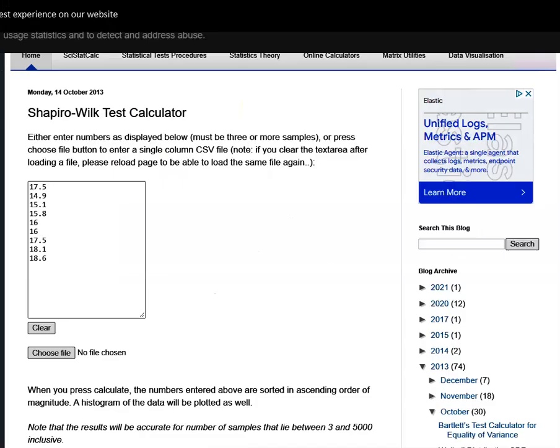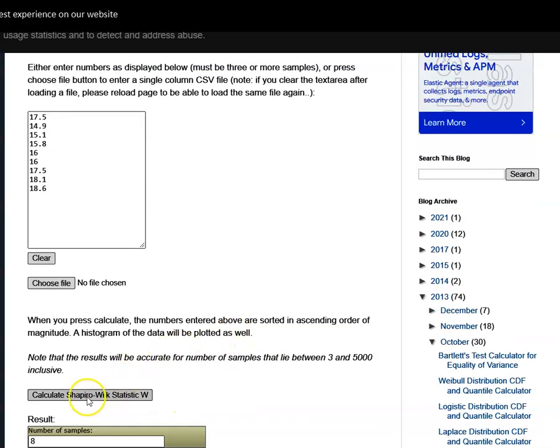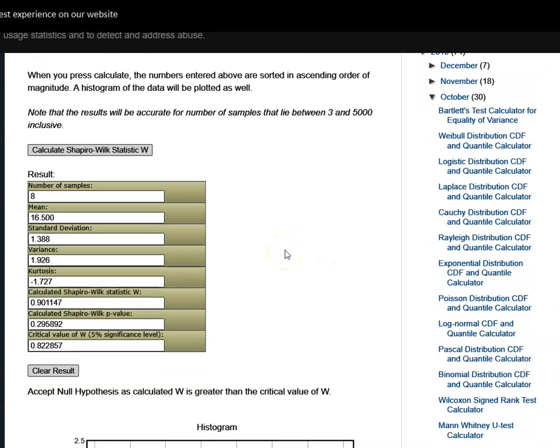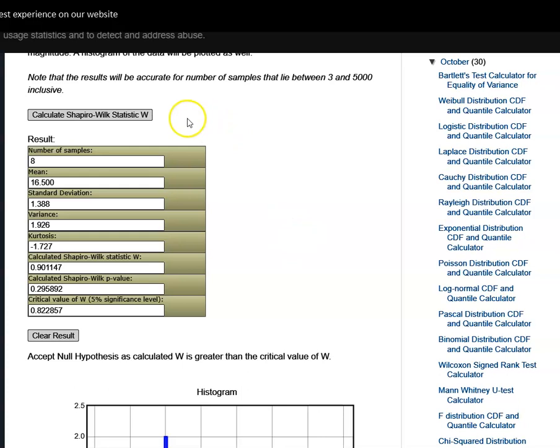So we head over to this Shapiro-Wilk test online calculator. And we input our data, our observations, just simply like that. We then click on calculate the Shapiro-Wilk statistics. And we get all the necessary information.